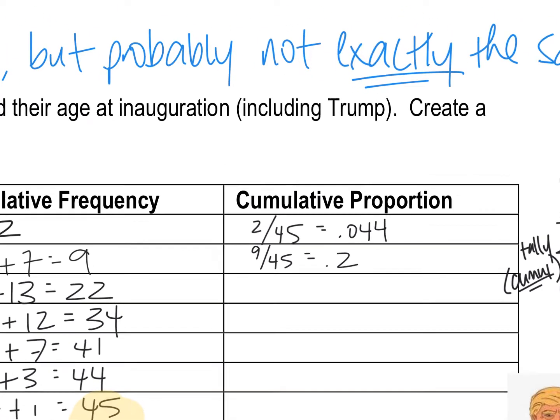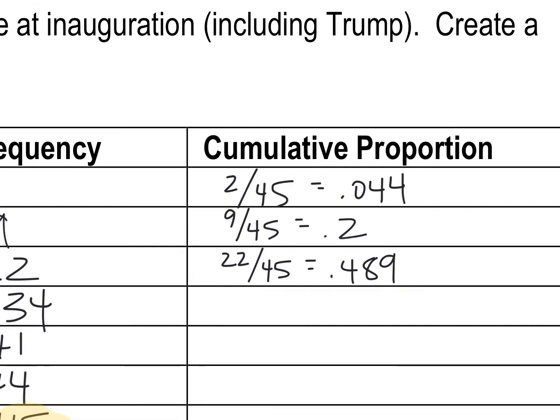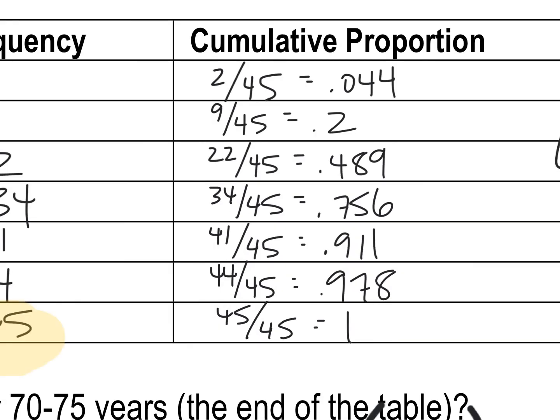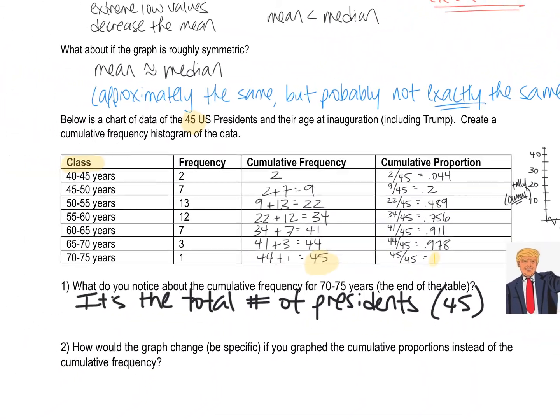That's exactly one fifth, which is 0.2. The next one was 22 out of 45, just shy of 50% at exactly 0.489. Then I've got 34 out of 45 and I'm just going to complete my table. And so here's what that table all completed looks like.